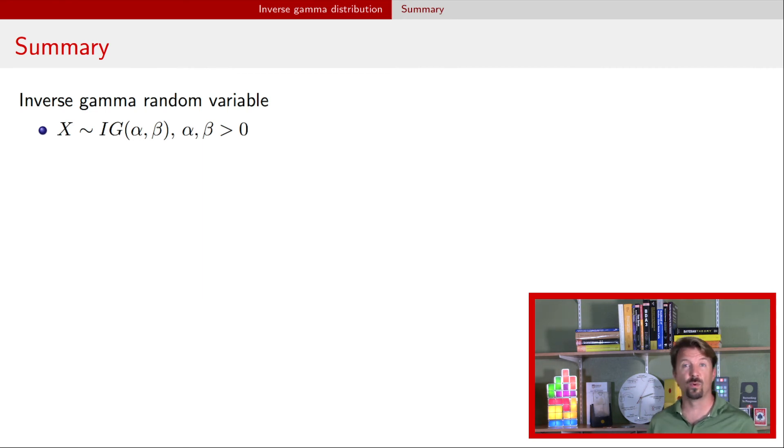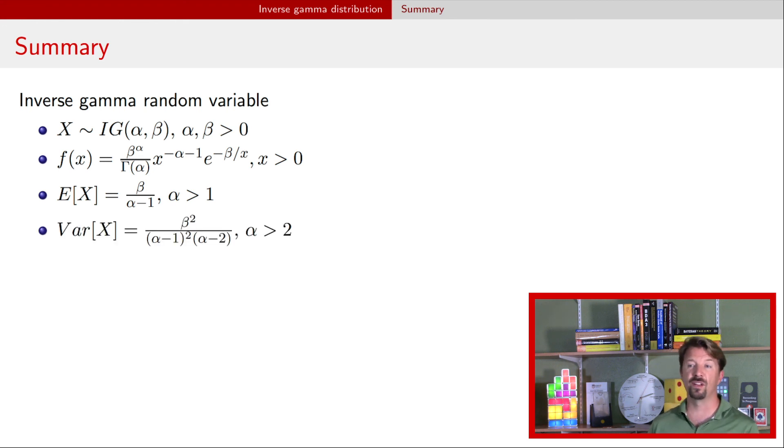So a very quick summary here of what we talked about. We introduced this inverse gamma random variable. It has two parameters, both of which need to be positive. The PDF shows you that you have a support over the positive reals. The expectation here is beta divided by alpha minus 1, and that's only valid for alpha values greater than 1. And the variance, similarly, is this formula for alpha greater than 2.